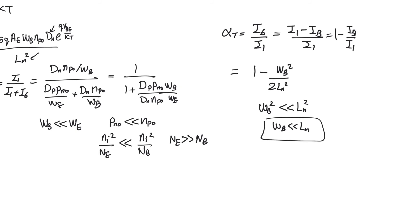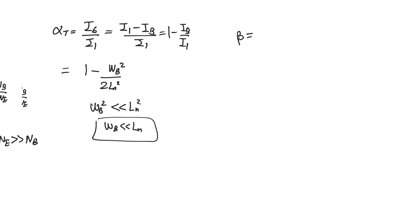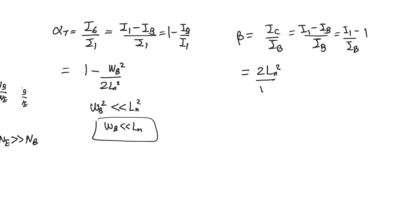Beta, the common emitter current gain, is defined as IC over IB. Since IC = I1 − IB, we get beta = (I1/IB) − 1, which with algebra yields beta = 2·Ln²/Wb² − 1. If Ln is much larger than Wb, then beta ≈ 2·Ln²/Wb², which is large. So again we arrive at the requirement that Wb be much smaller than Ln in order for beta to be large.